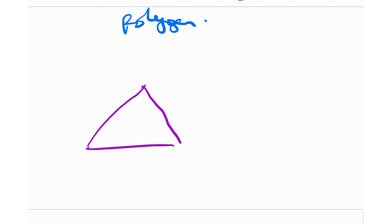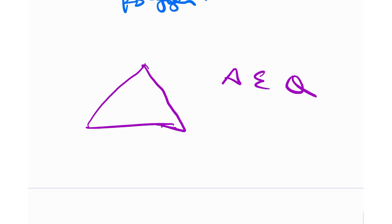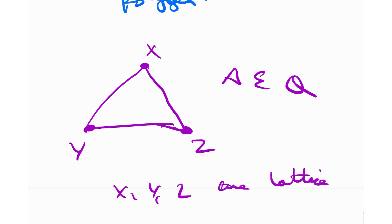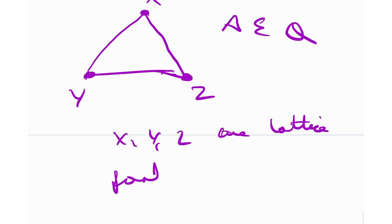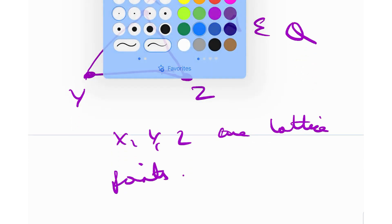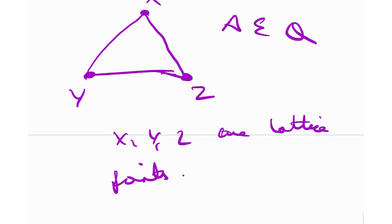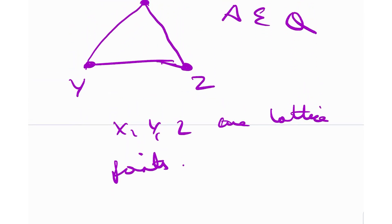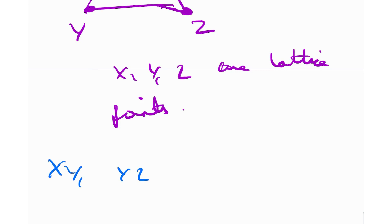How is this related to the problem? In the problem they said the area is rational. If the area is rational, we can satisfy that condition by considering lattice points — whenever we have lattice points the area will be rational. But we also need to ensure that the side lengths between points are irrational.